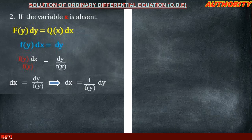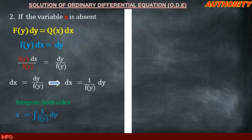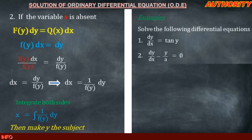The solution is obtained by integrating both sides. After writing dx equal to 1 over f(y) dy and integrating, we get x equal to the integral of 1 over f(y) dy. After integrating both sides, make y the subject. Now let's take examples. Solve the following differential equations: number one, dy/dx equal to tan y; number two, dy/dx minus y over a equal to 0.